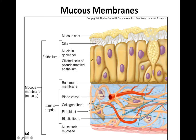Attached to your lamina propria — you can see all those fibers and white blood cells around — you then have your muscularis mucosa, which is a little bit of smooth muscle. So the three main sections are: muscularis mucosa, lamina propria (connective tissue), and epithelium. You can also see some cilia in some parts of mucous membranes. So those are mucous membranes.